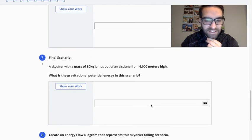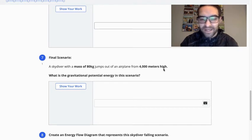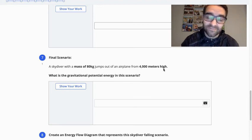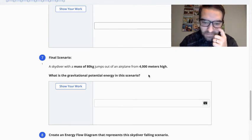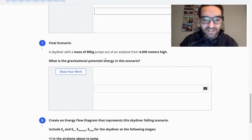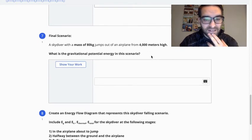Then our final scenario, getting a little trickier, but we have a skydiver now, a mass of 80 kilograms. I tried to just make a nice, simple number for us. Jumps out of an airplane 4,000 meters high. And the reason I chose 4,000 is because when I looked it up, I got lots of numbers in feet. And it's between 10,000 and 14,000 feet is a normal jump height for skydivers. And 4,000, I believe, is just around 13,000 feet. So 4,000 meters, nice round number for us. What is the potential energy for that skydiver? And don't be surprised if it's a very large number. They are very high. So just keep that in mind.